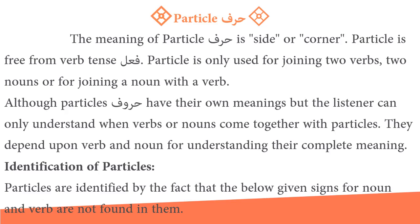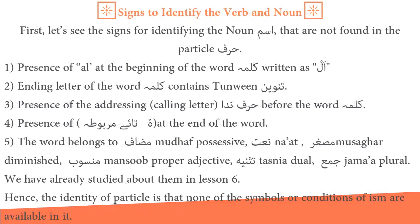Identification of particles: particles are identified by the fact that the signs for noun and verb are not found in them. Signs for identifying nouns that are not found in particles include: (1) presence of al (aliflam) at the beginning; (2) ending letter contains tanwin; (3) presence of the calling letter — harf nida — before the word; (4) presence of ta marbuta at the end; (5) the word belongs to mudaf (possessive), naat, musaghar (diminutive), mansoob, tathniya (dual), or jama' (plural). Hence, the identity of particle is that none of the symbols or conditions of ism are available in it.